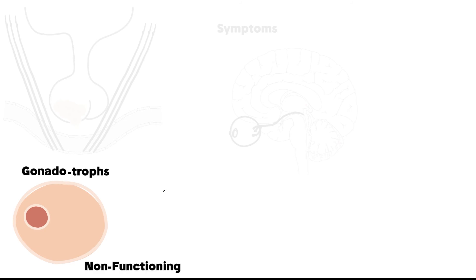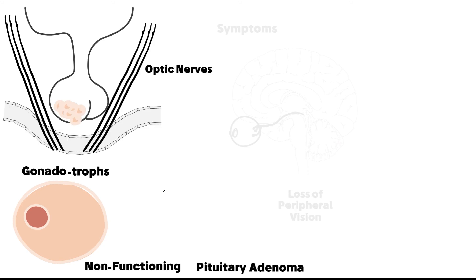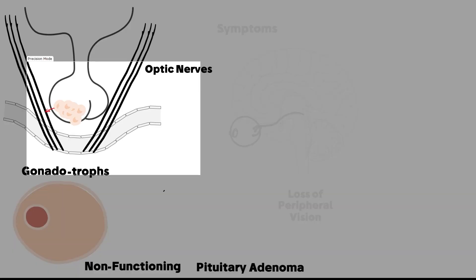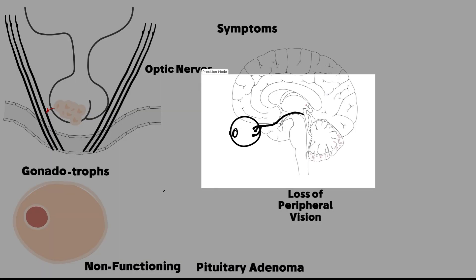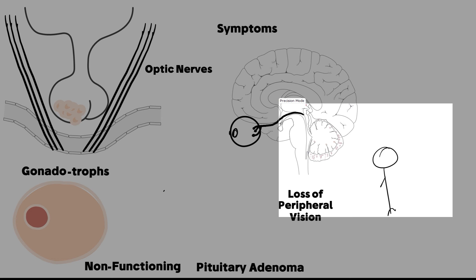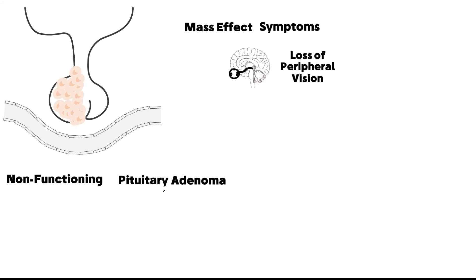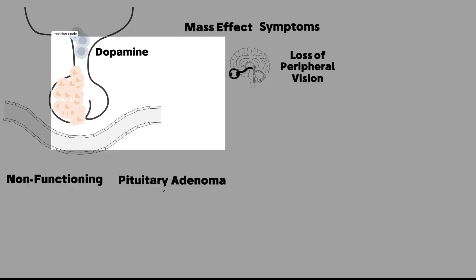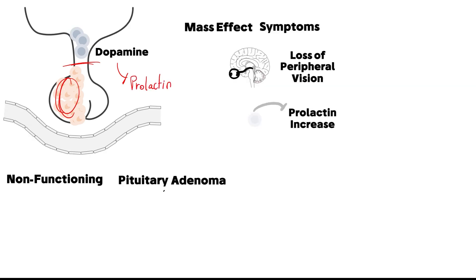The last type is the non-functioning or non-secreting pituitary adenoma, originated from gonadotrophs. They can have a negative impact by their mass effect — for example, pressing on the optic nerves as they pass nearby the pituitary gland and optic chiasm. The patient will most probably not notice they are losing peripheral vision. The second mass effect is blockage of dopamine, so dopamine cannot reach the anterior pituitary to suppress prolactin, causing a mild increase in prolactin — not to the degree seen in prolactinoma.